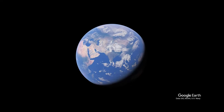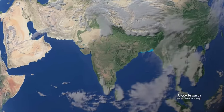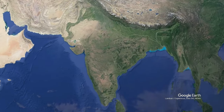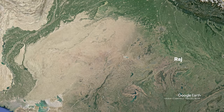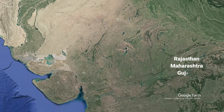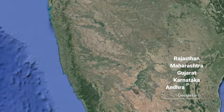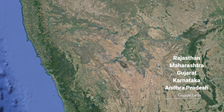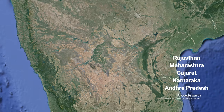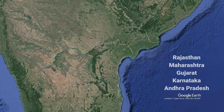In India, safflower is an important oil-seed crop. It is cultivated in states like Rajasthan, Maharashtra, Gujarat, Karnataka, and Andhra Pradesh. The climatic conditions in these regions are suitable for safflower cultivation.